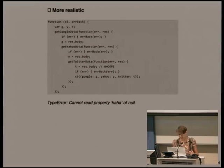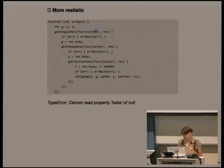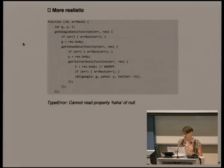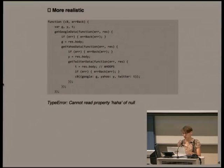How do you signal errors? In a more realistic version, every time a callback gets its result, it gets a possible error value. This is purely conventional in Node, and a lot of libraries don't actually do it properly. You have to test whether the error variable has been set to non-null; if so, you call a special error callback that returns the error value. The convolutedness of this whole callback-driven approach makes errors more or less inevitable.